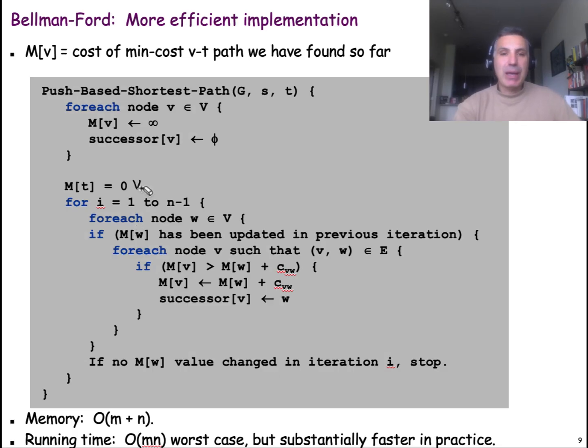There is a more space-efficient implementation of the Bellman-Ford algorithm. Instead of having the matrix M, which is n by n, we can have only a single column, n by one. We have one entry for every node in the graph. The element of this column that corresponds to node V is the cost of the optimal path we have at this point from node V to the target. Of course, this cost will be gradually decreasing as the algorithm executes. So, we only need to remember, essentially, the last cost we have discovered so far for each of these nodes V.